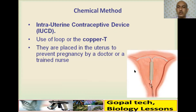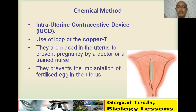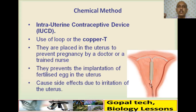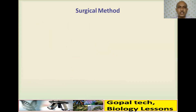The copper T prevents implantation of the fertilized egg in the uterus — fertilization may occur but implantation does not. It must be inserted by a qualified doctor or trained nurse. It may cause side effects due to irritation inside the uterus. There are certain advantages and disadvantages. The third method is the surgical method.